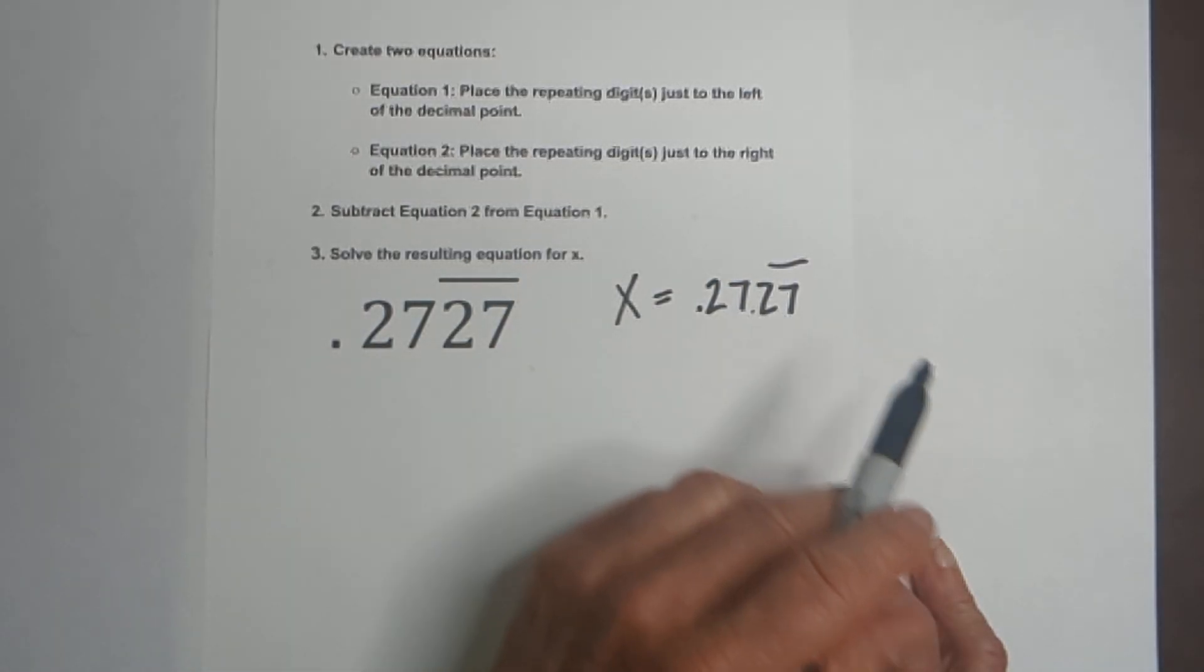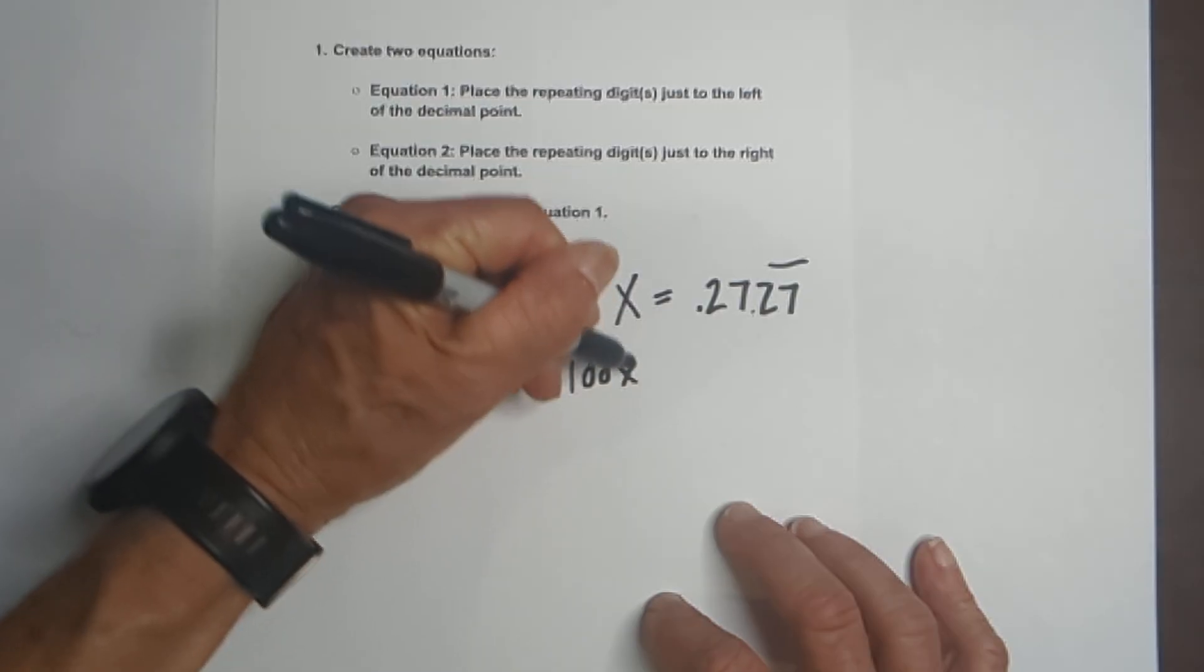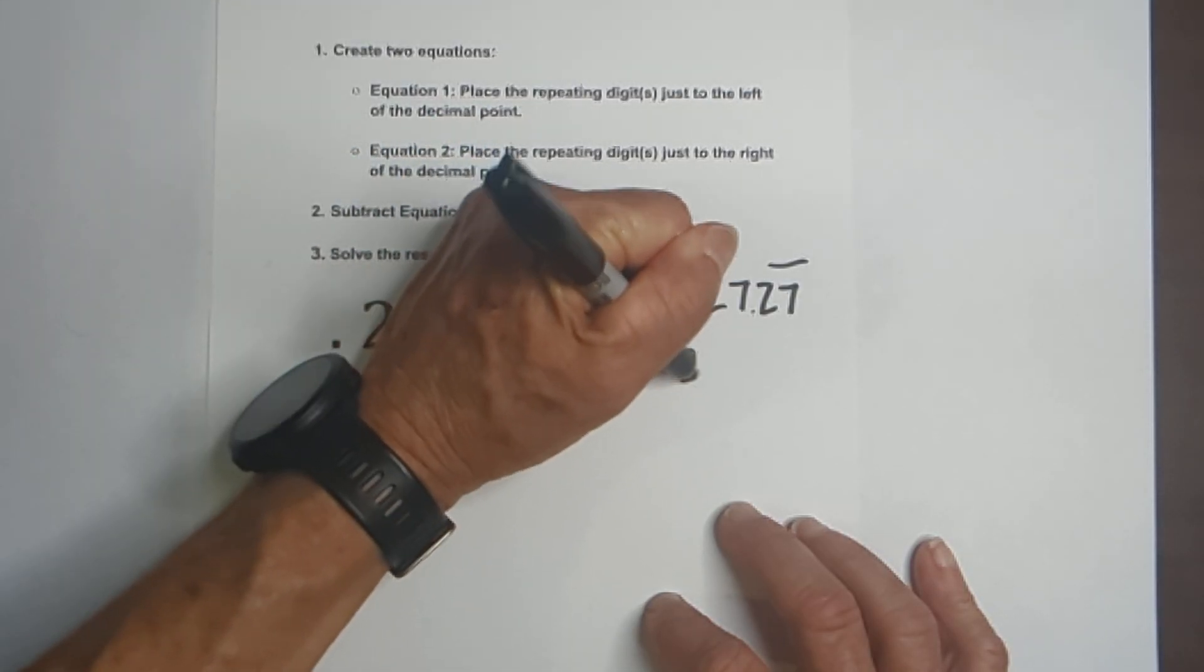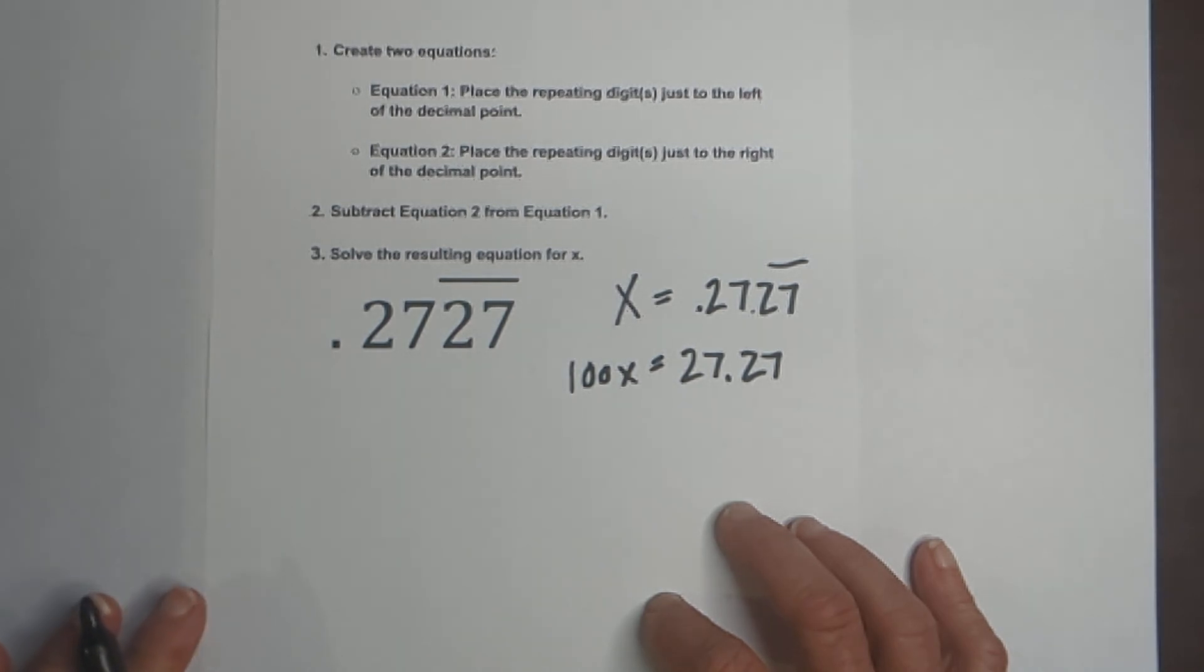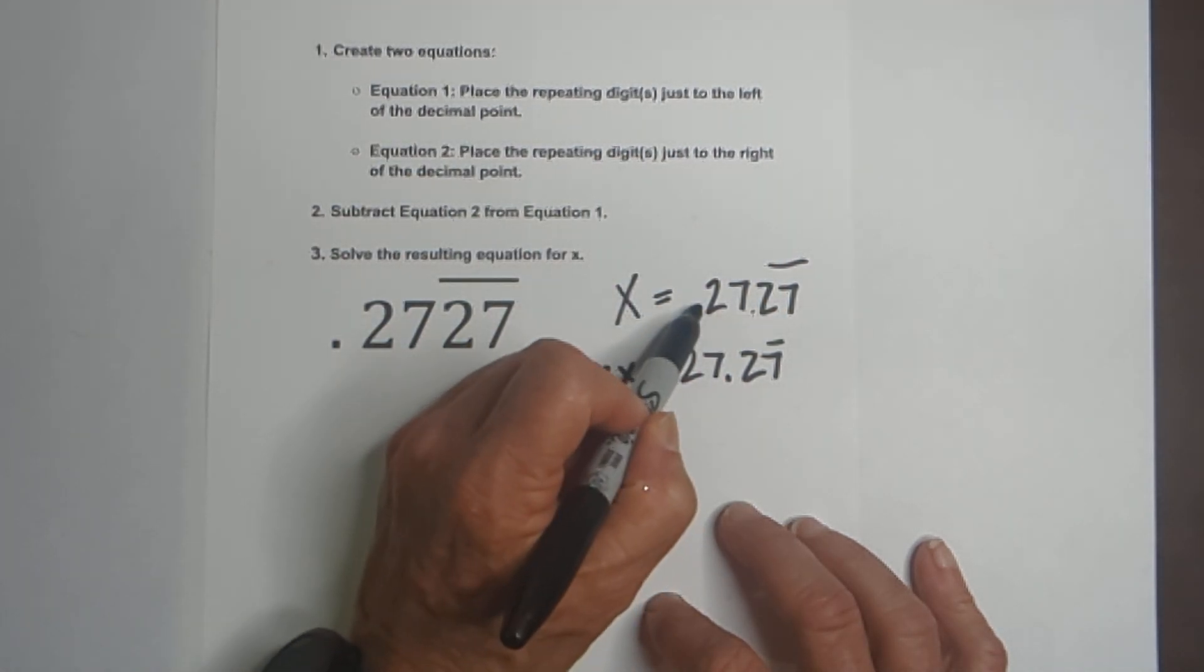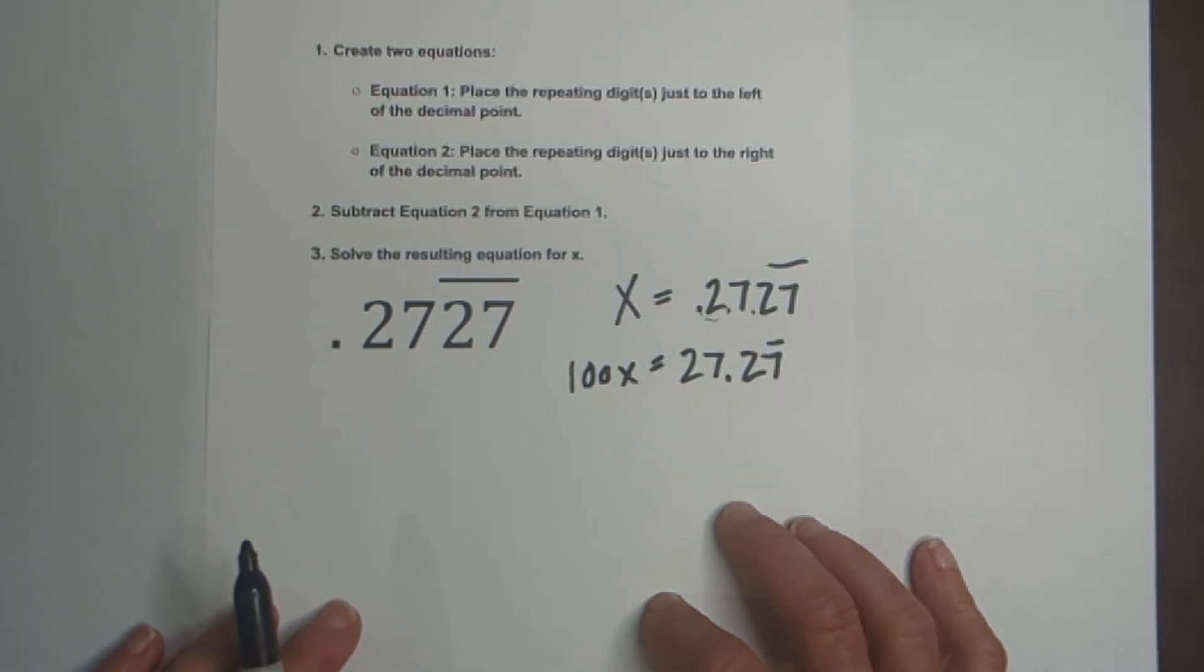And what you do to the left of the equation, you need to do to the right. So it will be 100x equals 27.2727 and that will be repeating. Okay? So because we've multiplied by 100 and moved it two places to the right. Now,